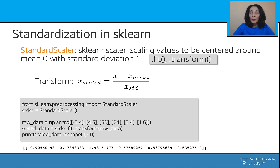Looking at these numbers, they are smaller, typically between minus 1 and 1, or between minus 2 and 2. The value 1.98 is almost two standard deviations away from the mean. The StandardScaler traditionally produces values between minus 3 and 3, given that a normal distribution allows roughly 99% of data to stay within plus or minus 3 standard deviations from the mean.